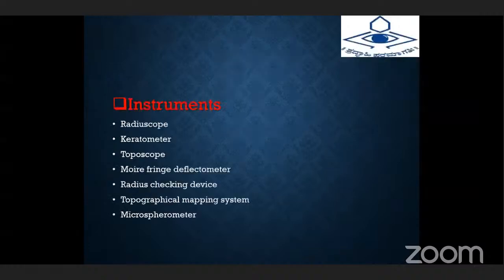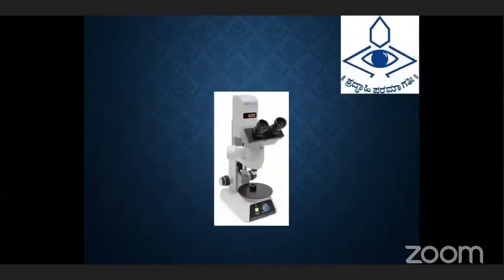The instruments used to verify lens parameters are: the radius scope, keratometer, toposcope, moire fringe deflectometer, radius checking devices, topographical mapping system, and microspherometer.